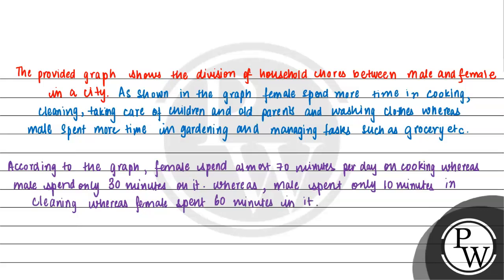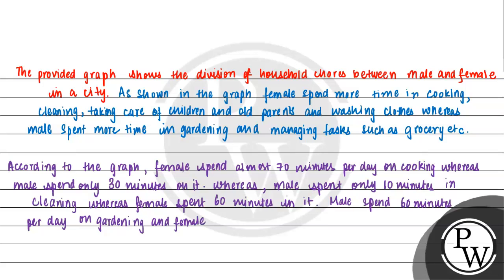If we talk about gardening, males spent 60 minutes per day on gardening, whereas females only spent 20 minutes.